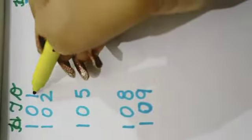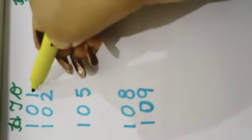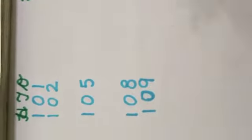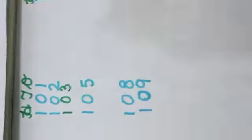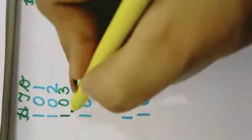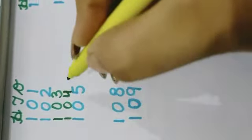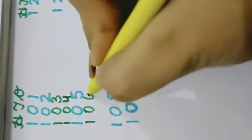In our next column we are given 100. 10, 1: 101. 102. What comes after 102? 103. What comes after 103? 104. What comes after 104? 105. What comes after 105? 106. What comes after 106?